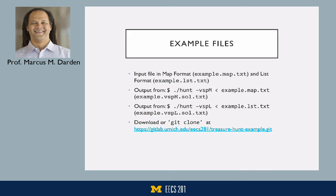Good luck. You can find the example files from this particular video at the address below — you can download them or clone them through Git. There's the example map shown in map format and in list format, and also the outputs, including verbose stats and the path displayed in map mode and in list mode. You can take those files and compare your work with them.